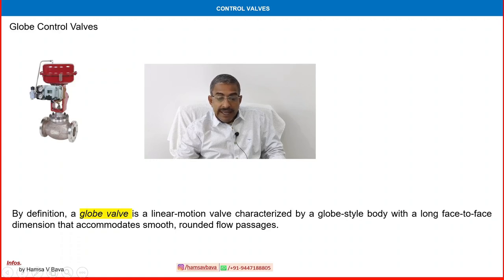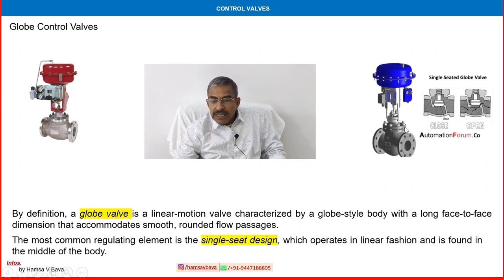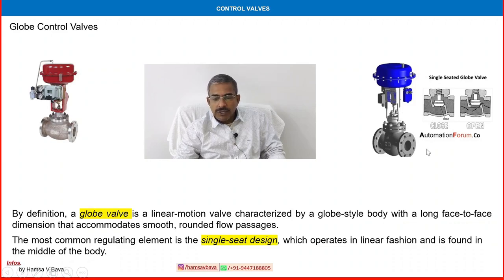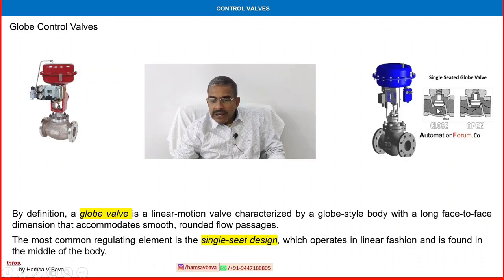By definition, a globe valve is a linear motion valve characterized by a globe style body with a long face-to-face dimension that accommodates smooth rounded flow passages. You can see globe type trim here — the flow is coming from here, turning 90 degrees, and again turning 90 degrees going up and down. The rising stem is connected; the trim is going up and down. The closing element moves up and down to maintain the valve opening or closing position. In a control valve, it is percentage-wise opening — slowly opening until fully open or fully closed. The most common regulating element is a single seat design, which operates in a linear fashion and is found in the middle of the body.